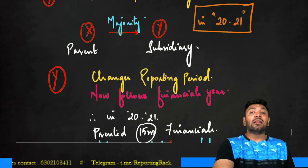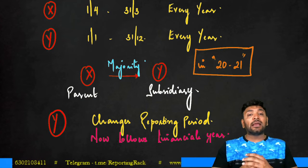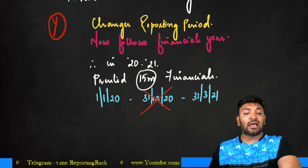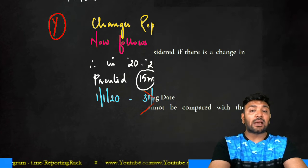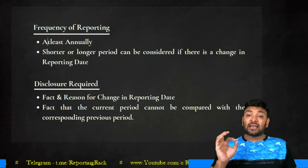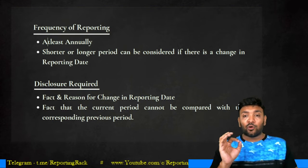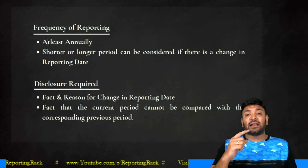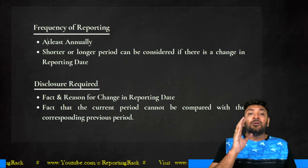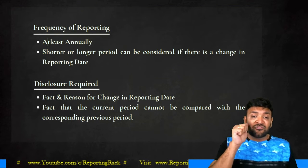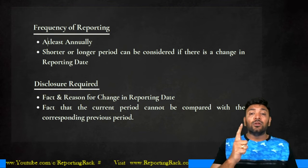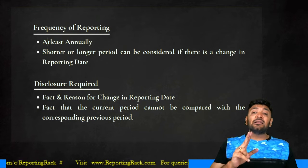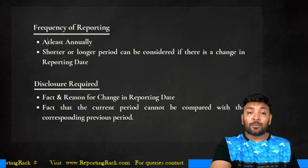In such a case, the concept of reporting financial statements annually is broken. The standard therefore says that a shorter or longer period can be considered if there is a change in the reporting date. Whenever such a change occurs, you must disclose: first, that there is a change in the reporting date; second, the reason for the change; and third, the fact that the current reporting period cannot be compared with the corresponding previous period.